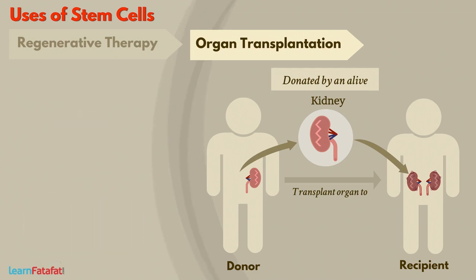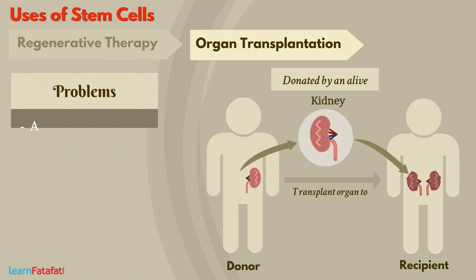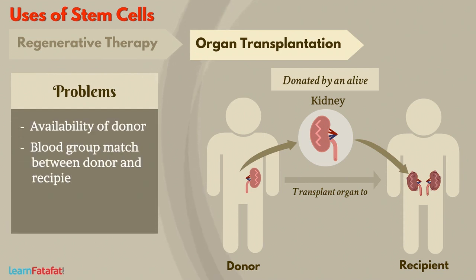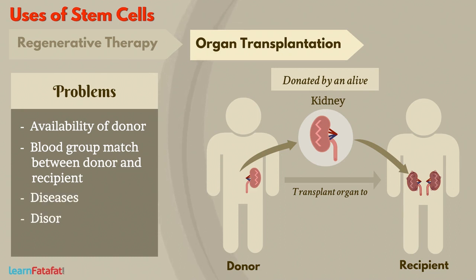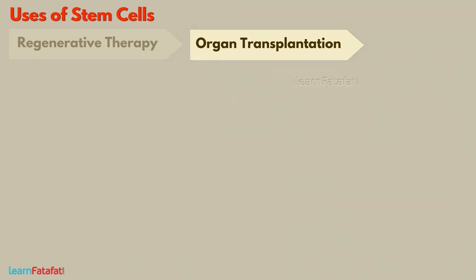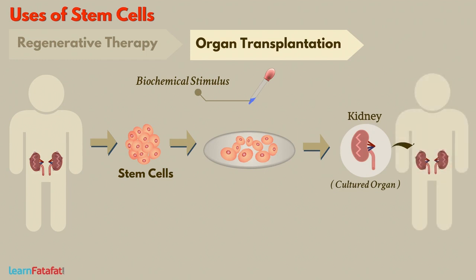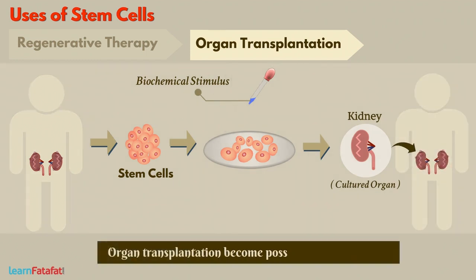In the case of organ transplantation in this way, there are several problems like availability of a donor and the necessity of having a match between donor and recipient in terms of blood group, diseases, disorders, age, etc. In such cases, it is possible to obtain stem cells from a person's own body and, with a suitable biochemical stimulus, produce the required organ from them for transplantation. Thus, organ transplantation becomes possible without a donor.